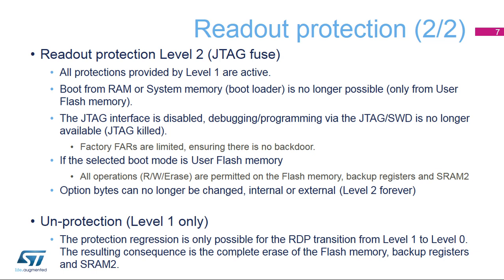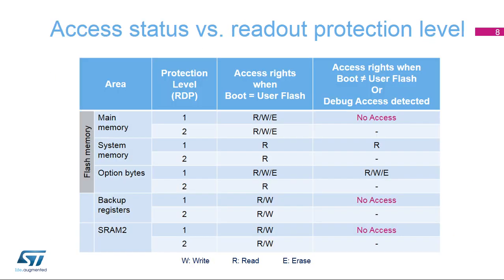Changing the level of RDP protection is only permitted when the current protection level is 1. Changing the protection level from 1 to 0 will automatically erase the entire user flash memory, SRAM2, and backup registers.